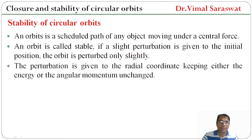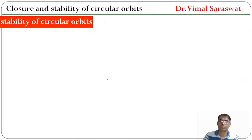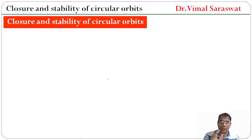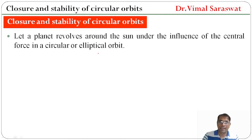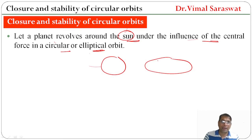The perturbation is given to the radial coordinate, keeping either the energy or the angular momentum unchanged or constant. Let a planet revolve around the sun under the influence of the central force in a circular or elliptical orbit. We already know that the planet revolves in an elliptical orbit because only circular and elliptical orbits are closed orbits; other orbits are unclosed.